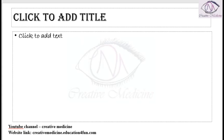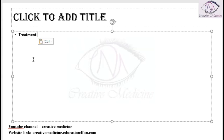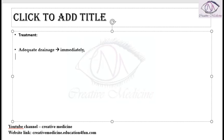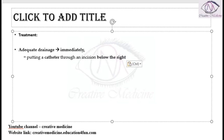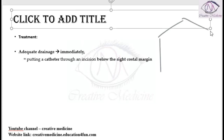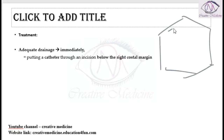To treat a patient with duodenal stump blowout syndrome, adequate drainage must be done immediately. This is achieved by putting a catheter through an incision placed below the right costal margin, and from there draining the contents.